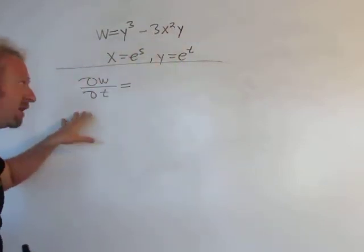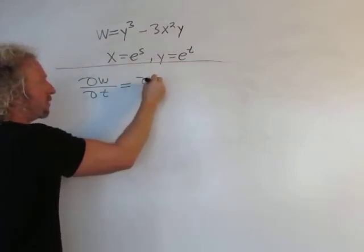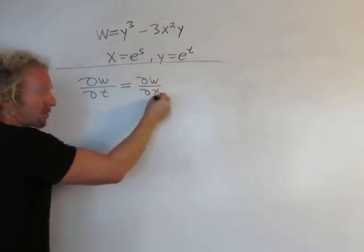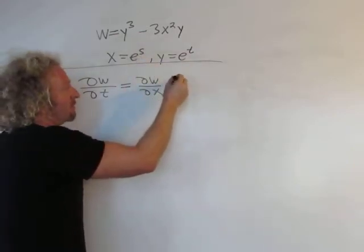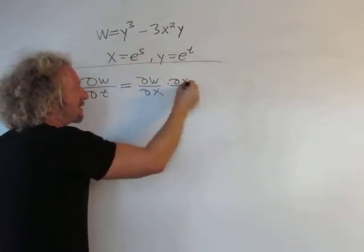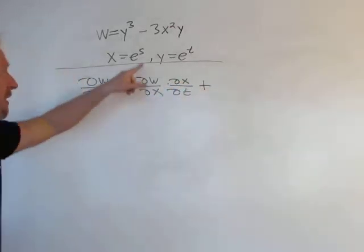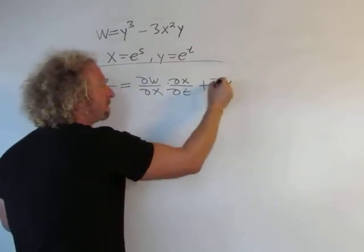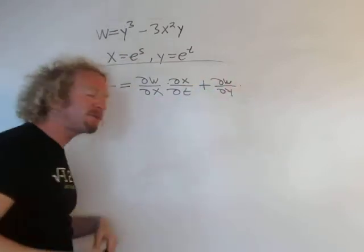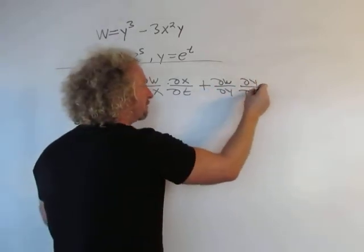So del w del t, well, just looking at this, it would be del w del x times the derivative of the inside. So that would be del x del t plus, same thing here. It would be del w del y times the derivative of the inside. So del y del t.